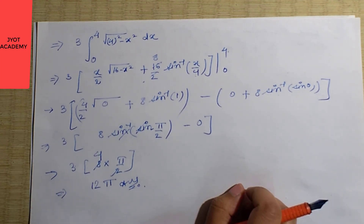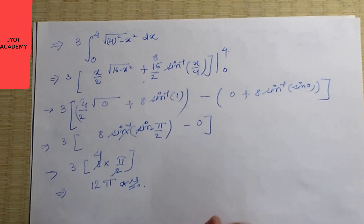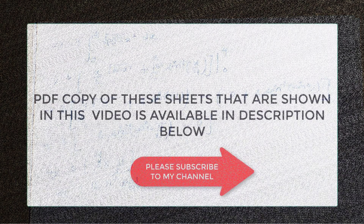So the final answer for question number 4 is 12π. I hope I have shown you step by step how to find this area. We will continue from question number 5 in the next video. Thank you students for watching — please like, share, and subscribe to my channel.